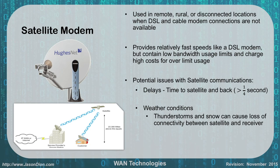Another problem with satellite is weather conditions. If there's a snowstorm or thunderstorm at either your location or the service provider's location, you're going to have problems. For instance, if your satellite provider is located in Colorado for their downlink and it has a snowstorm, even though you're in sunny Miami, you might not have service. Any thunderstorm or snowstorm between you, the satellite, and the receiver can cause problems.